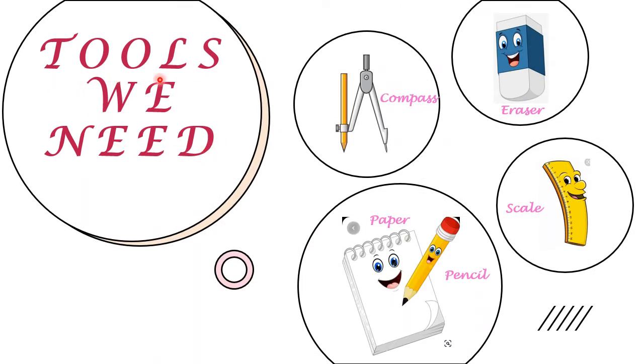Now let's see some tools we need to draw a circle. We need a compass with pencil, an eraser, a scale, paper, and pencil for drawing lines. So let's begin making a circle.